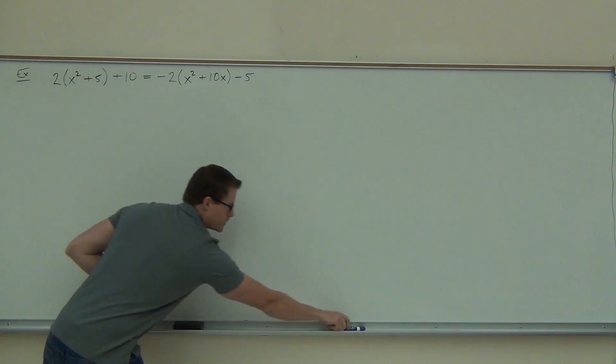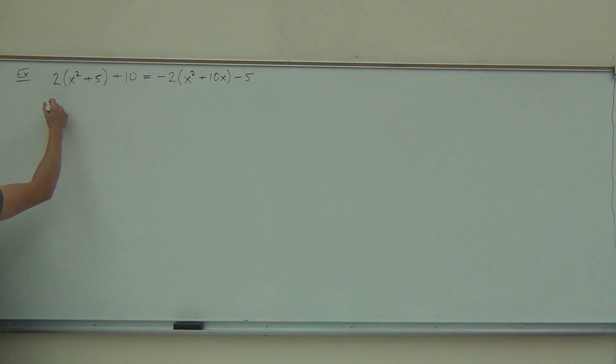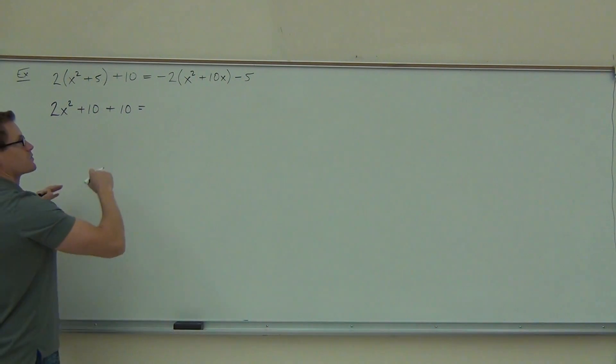So let's go ahead and distribute. Can you tell me what I'm going to get? Yeah. Less ten. Perfect. Less ten. It's still there. Very good. Equal. Left-hand side's done. We've gotten rid of our parentheses. If we have to combine like terms, we'll do that on the next step.